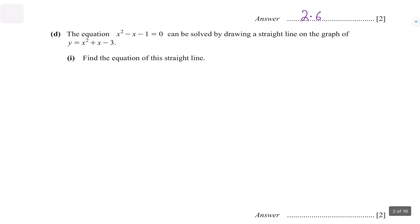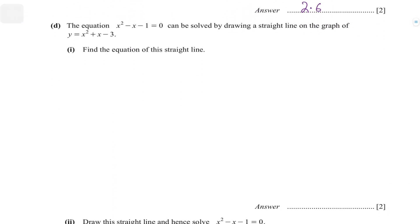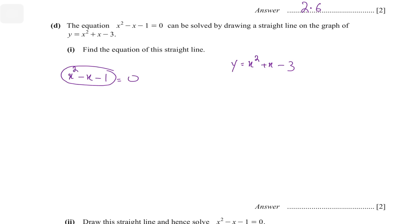In the next part it says: the equation x squared minus x minus 1 can be solved by drawing a straight line on the graph y equals x squared plus x minus 3. Find the equation of this straight line. Again this is the same concept. You have to solve x squared minus x minus 1 equals zero by drawing a straight line, so bring y in front of you: y equals x squared plus x minus 3.